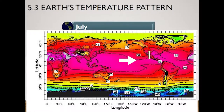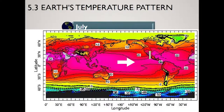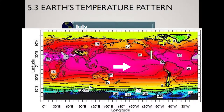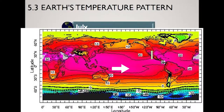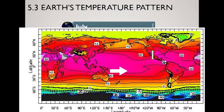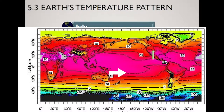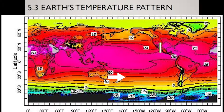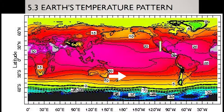Looking at this average July map, you can see how temperature changes. Remember the factors: altitude, latitude, cloud cover, and land-and-water distribution. If your planet was just covered by water, the lines called isotherms — which connect equal temperatures (iso = equal, therm = temperature) — would be parallel to each other because the only factor would be latitude. But since you have a distribution of land and water, other things happen, especially over land.